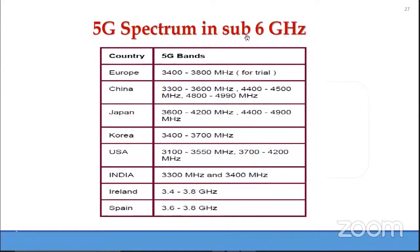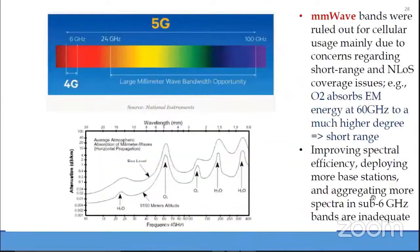The 5G spectrum in sub-6 GHz (microwave) is allocated in various countries between 2.6 and 6 GHz. Coming to millimeter wave: compared to the narrow microwave spectrum, millimeter wave offers large bandwidth opportunity — huge spectrum is available.